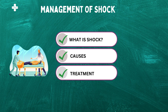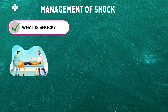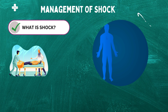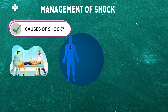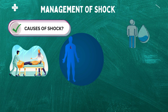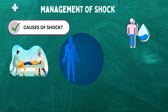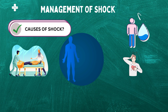First of all, what is shock? Shock is a life-threatening condition that occurs when the body's vital organs do not receive enough blood and oxygen to function properly. Shock can be caused by a variety of factors, including severe bleeding, dehydration, a heart attack, or infection.